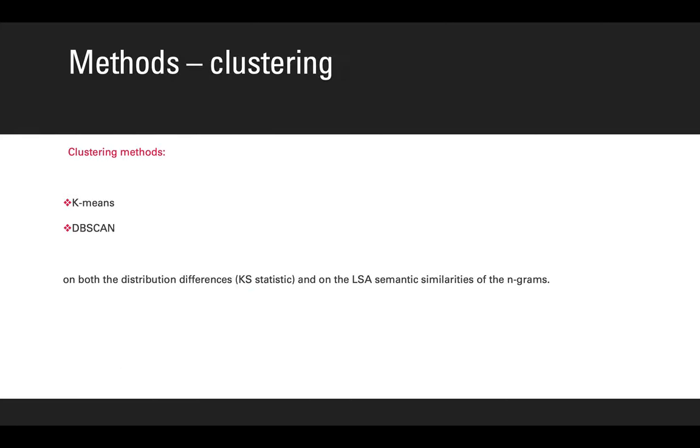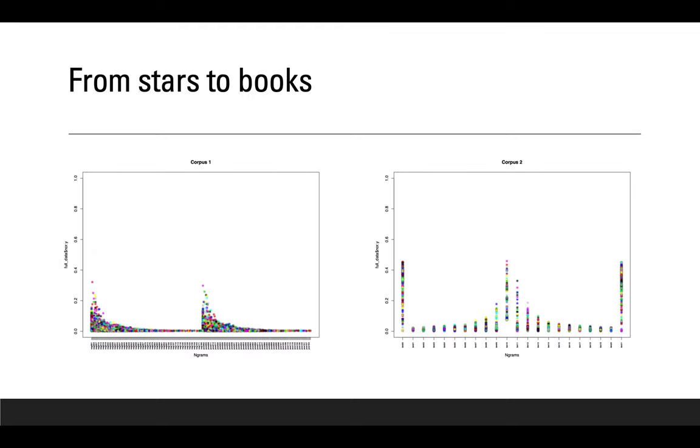For each of the six corpora, we used several clustering methods, such as k-means and DBSCAN, on both the distributional differences, where we calculated the Kolmogorov-Smirnov statistic, and on the LSA, or latent semantic analysis, semantic similarities of the n-grams.